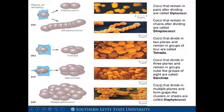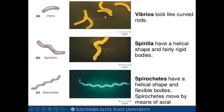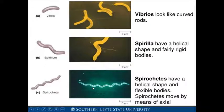Then, the third shape: we have spirillus or spiral bacteria. Spiral bacteria have one or more twists. In letter A, we have vibrio — vibrios look like curved rods. In letter B, we have spirillum — spirilla have a helical shape and fairly rigid bodies. In letter C, we have spirochete — spirochetes have a helical shape and flexible bodies. Spirochetes move by means of axial filaments.